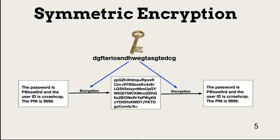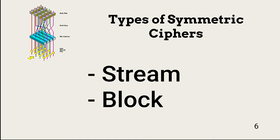At its most basic level, symmetric encryption uses a single shared key to both encrypt and decrypt data. There are two general approaches to symmetric encryption: use of stream ciphers or use of block ciphers.